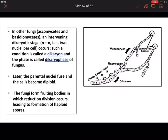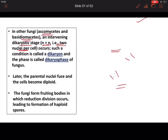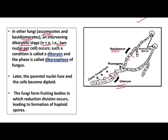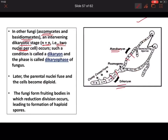The second type of sexual reproduction is seen in Basidiomycetes. Here, after plasmogamy a dikaryotic stage (n+n) is formed instead of immediately forming a diploid zygote. In the dikaryotic stage, one cell contains two nuclei. Monokaryon means one nucleus per cell; dikaryon means two nuclei per cell. This dikaryotic phase is maintained for some time.